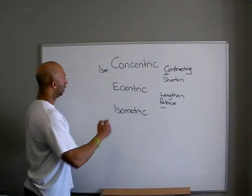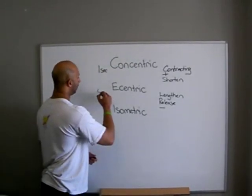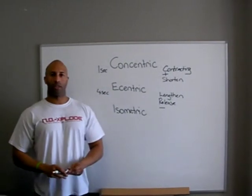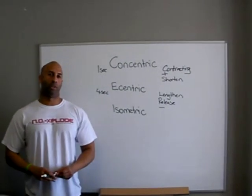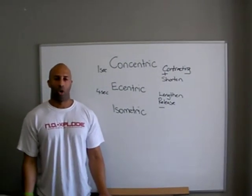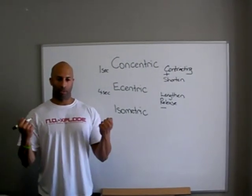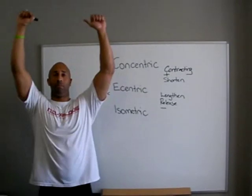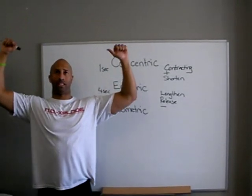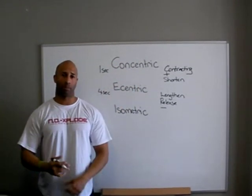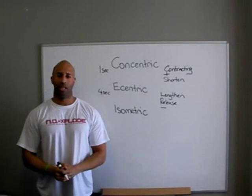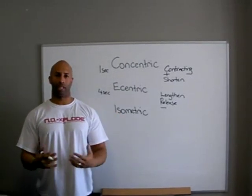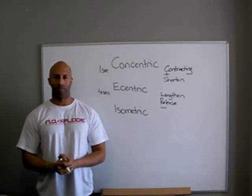So let's go through four seconds on the eccentric phase. All of a sudden you've got a five-second repetition: one second up, four seconds down, nice and slow. One second up, four seconds down, nice and slow — taking five seconds per repetition. This theory falls in perfectly with our time under tension theory.